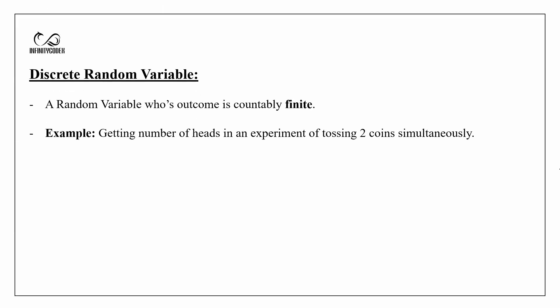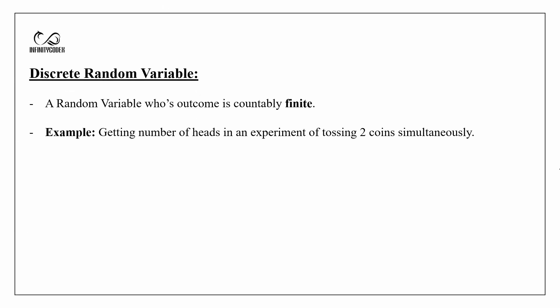Discrete random variable: a random variable whose outcome is countably finite. For example, getting the number of heads in an experiment of tossing two coins simultaneously.